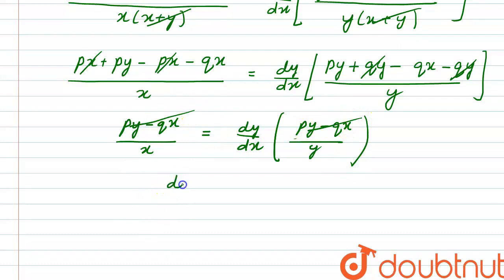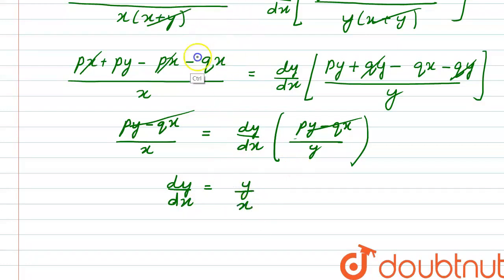So we have dy by dx equals y by x. This is what we had to prove. Hence proved. Thank you.